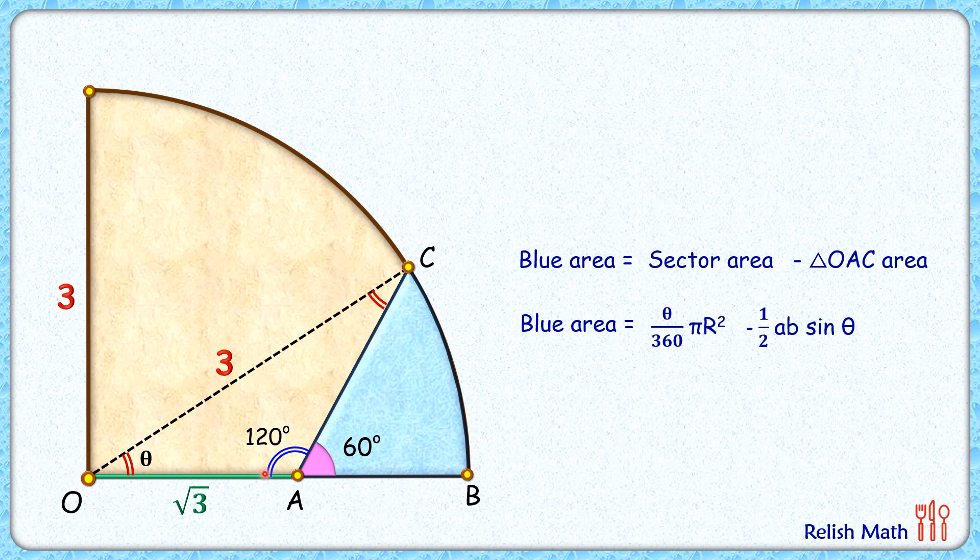In triangle OAC, we have side length 3 with opposite angle 120 degrees. We have side length √3, and the opposite angle is what we have to find. For that, we will use the sine rule.